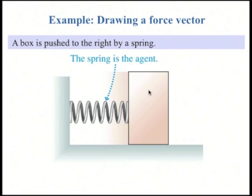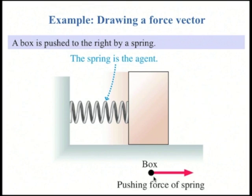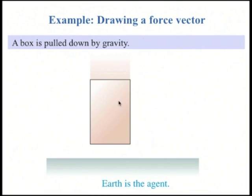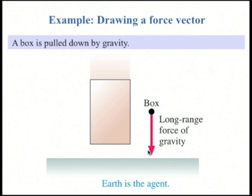A box is pushed to the right by a spring. Again, first you draw the box as a dot, and you draw the force going towards the right, emanating from the box and going towards the right. A box is pulled down by gravity — draw the box as a dot, and then draw the downward force of gravity.